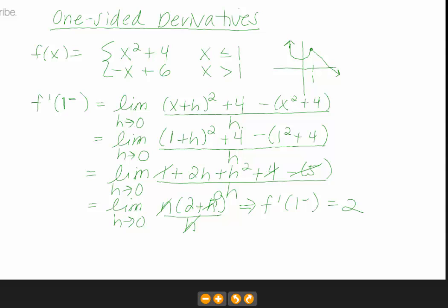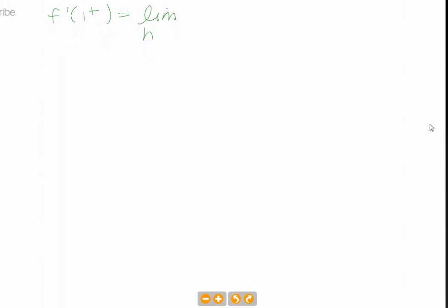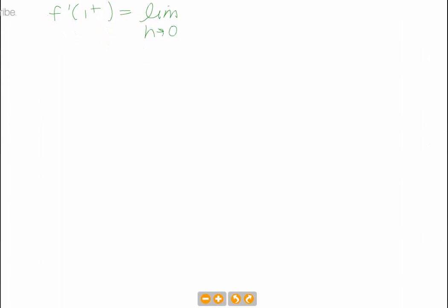Let's look at f prime of 1 from the right. So f prime of 1 from the right is going to be the limit as h goes to 0 of negative x plus h plus 6, minus negative x plus 6, all over h.